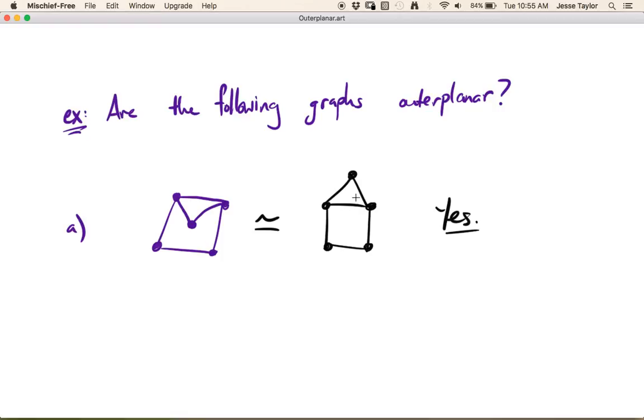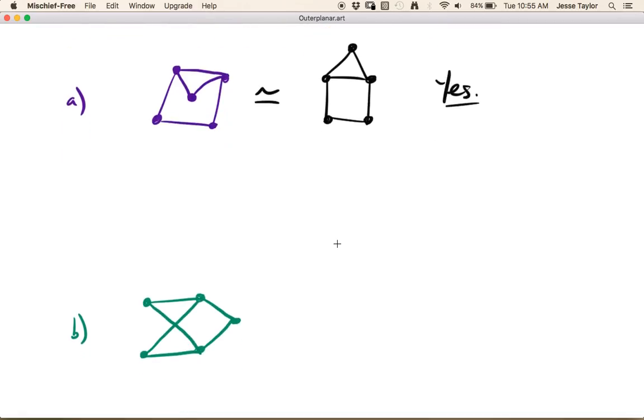Usually if you're asked if a graph is planar or if a graph is outer planar, the answer is either no with an explanation of why not, or yes and here is an outer planar embedding or here is a planar embedding depending on the problem. Let's look at another one.